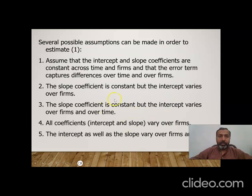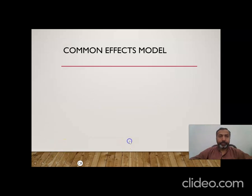In panel data analysis we can assume different things: that intercept and slope coefficients are constant across time and firms, or that the slope coefficient is constant but the intercept varies over firms, or that the intercept varies over both firms and time. There are basically three main models used under panel data analysis: the common effect model, the fixed effect model, and the random effect model.